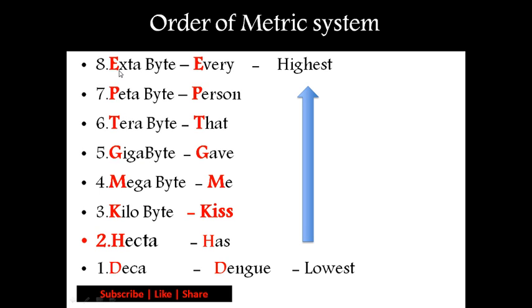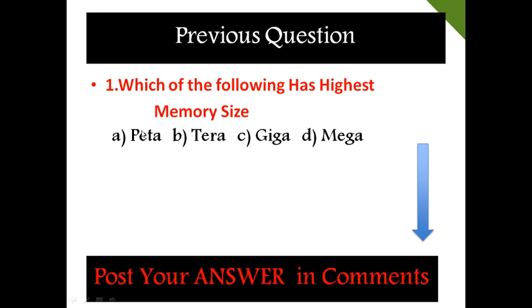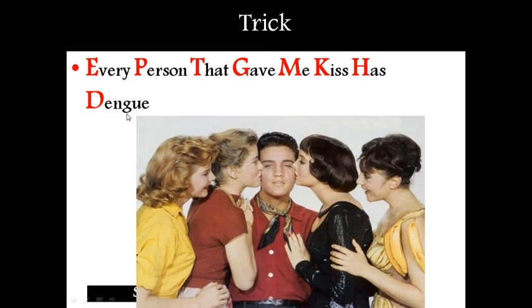Based on the starting letters, I assumed a few words. E for Every, P for Person, T for That, G for Gave, M for Me, K for Kiss, H for Has, D for Dengue. So the sentence is: 'Every person that gave me kiss has dengue.' Here E stands for Extra, P for Petabyte, T for Terabyte, G for Gigabyte, M for Megabyte, K for Kilobyte, H for Hecto, and D for Deca.